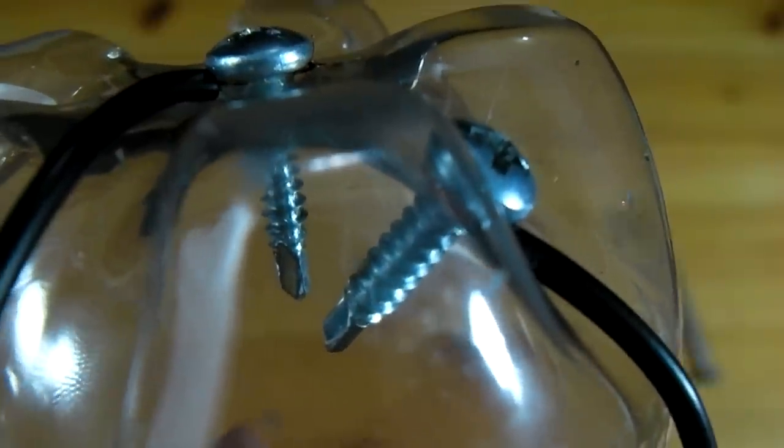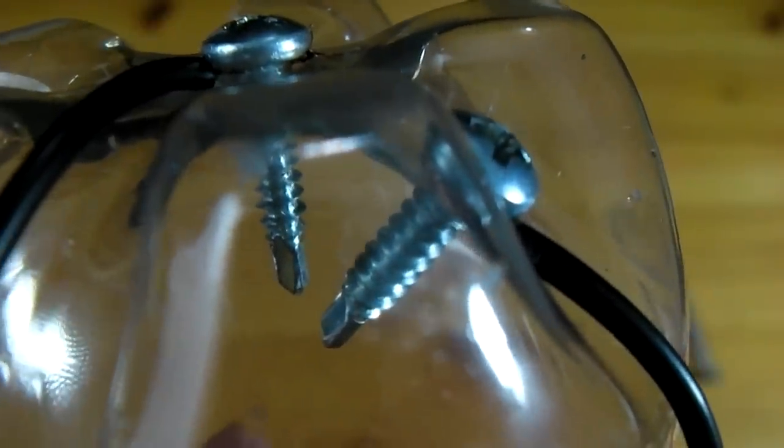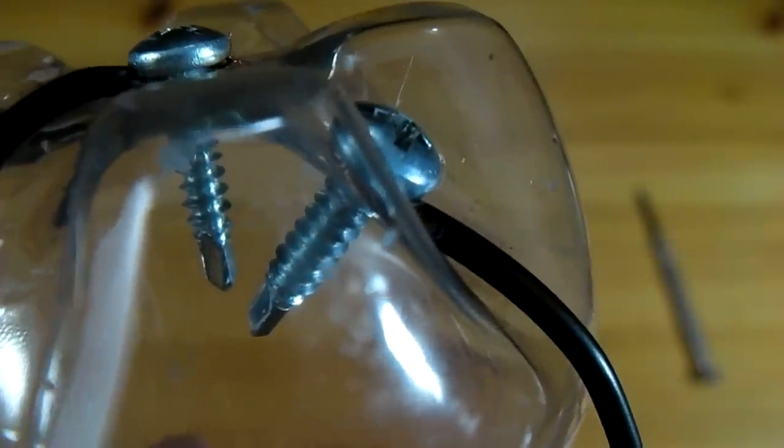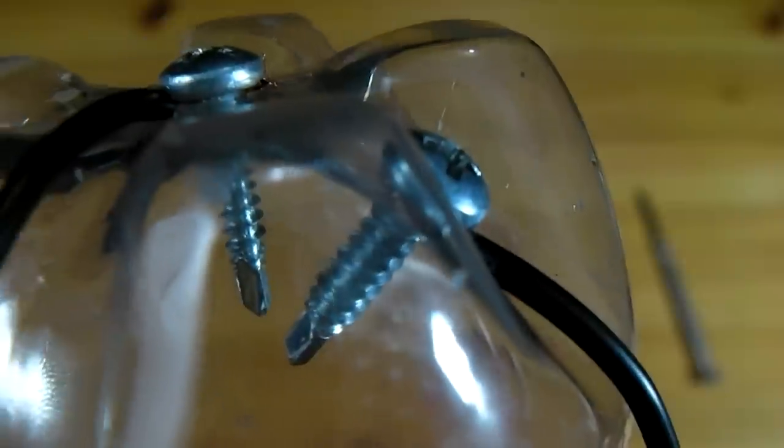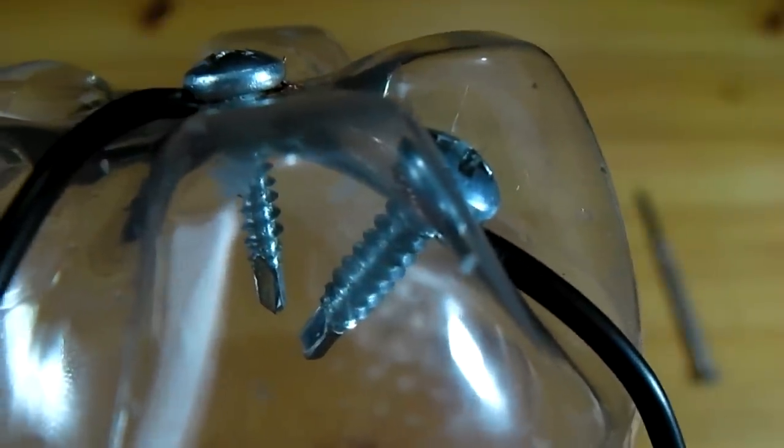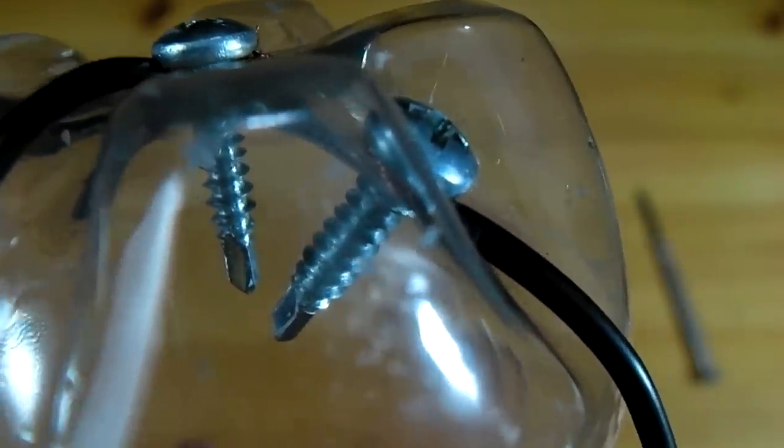Now, with both screws tightened down on a piece of 2 foot long wire, double check that the gap between the screw tips is about 1/4 inch. As long as the gap is around 1/4 inch, you can go ahead and cover the screw heads with hot glue.